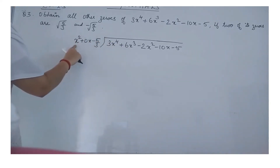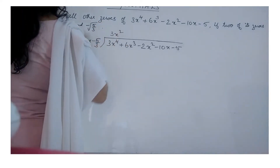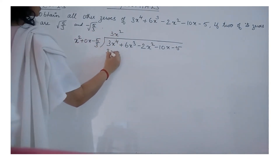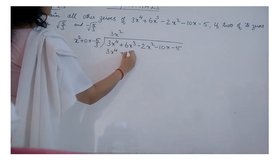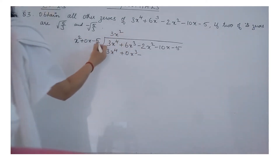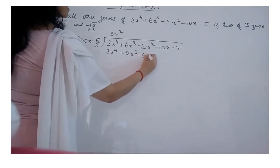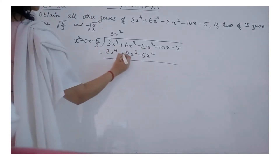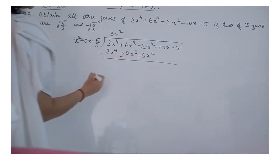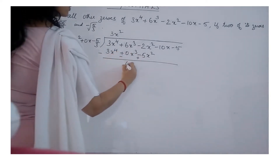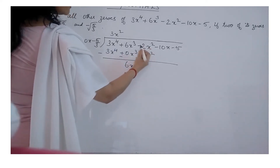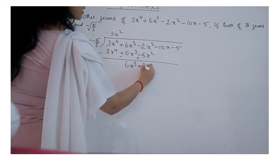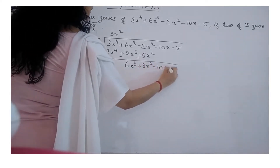3x⁴ divided by x² gives 3x². Then we multiply this quotient term back: we get 3x⁴ + 0x³ - 5x². After subtracting, the signs change, giving us 6x³, then -2x² + 5x² which is +3x², and -10x.